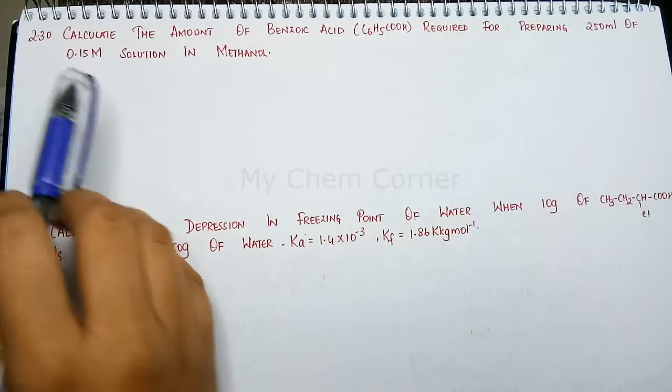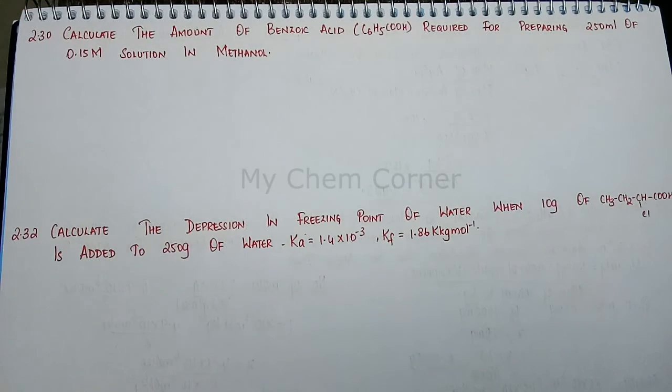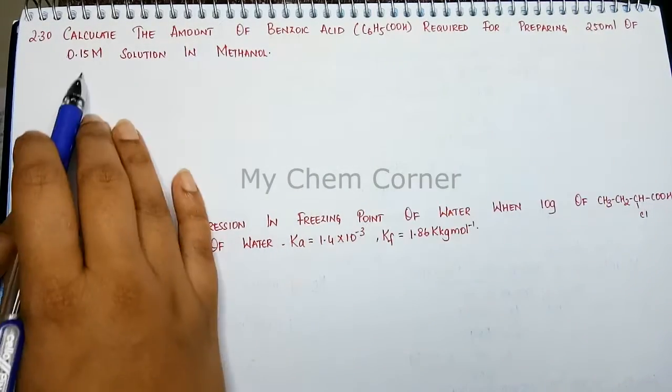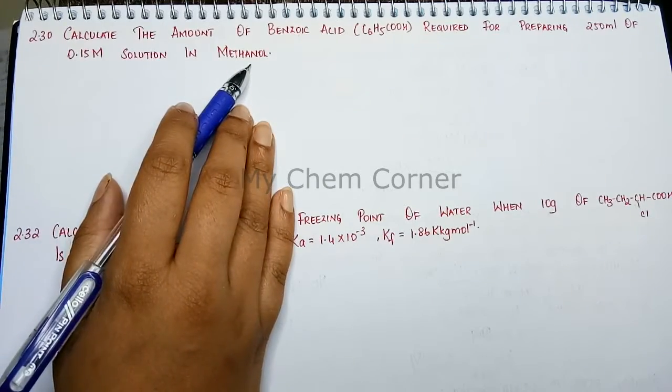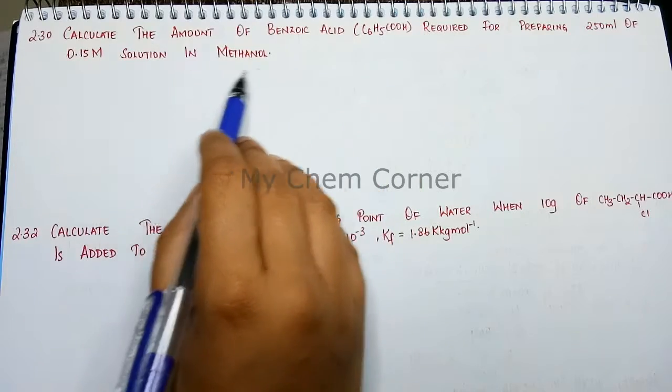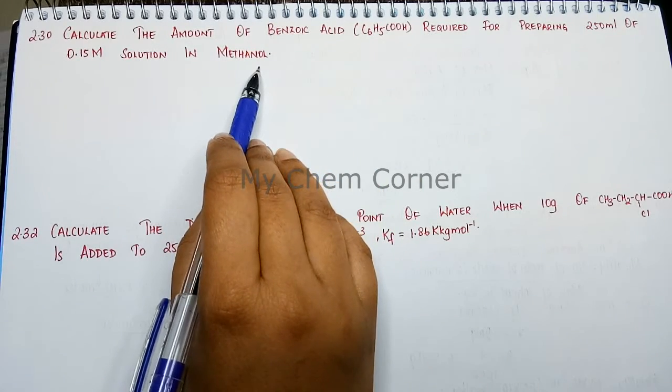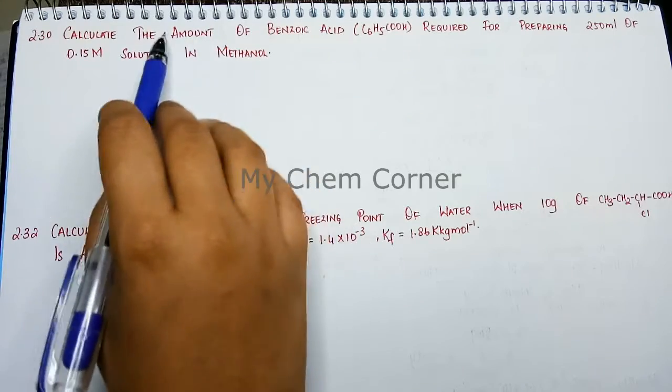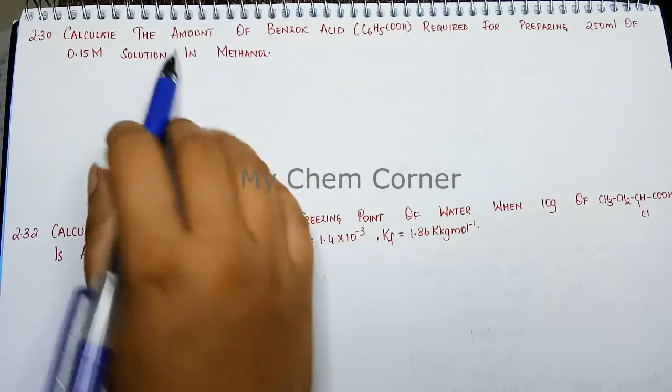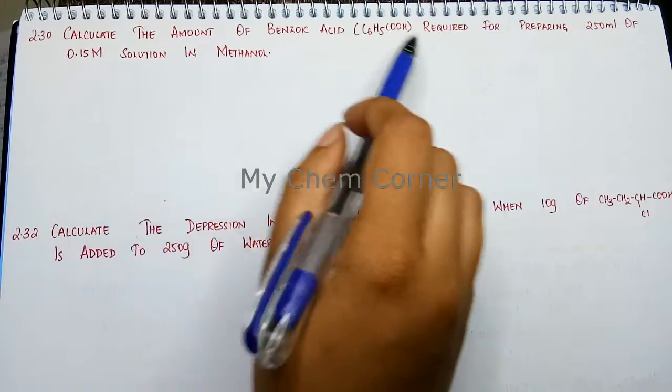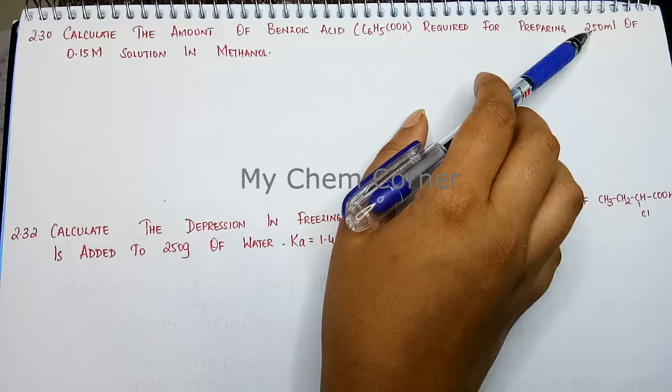Next is question number 2.30: Calculate the amount of benzoic acid required for preparing 250 ml of 0.1 molar solution in methanol. Here, our solute is benzoic acid and the solution is in methanol. What we need to calculate is the weight of benzoic acid required for this concentration when the solution volume is 250 ml.